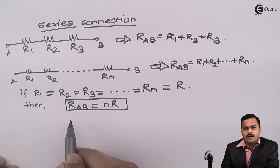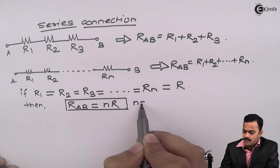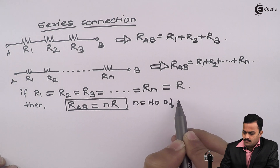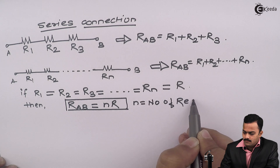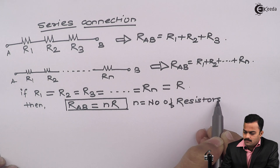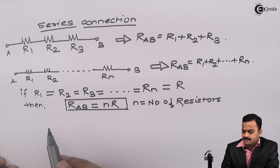Where n is the number of resistors connected in series.